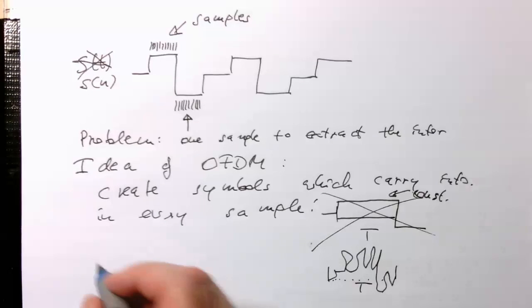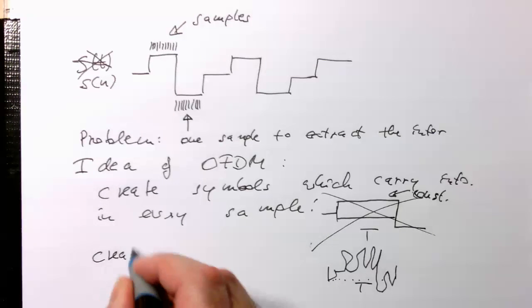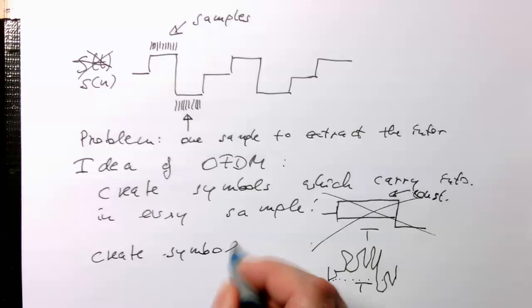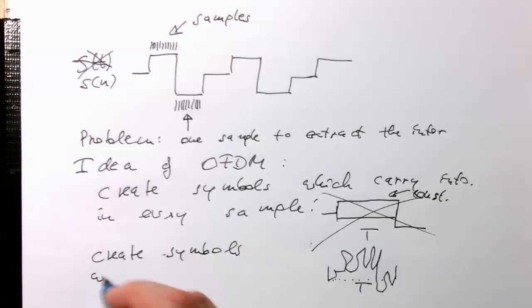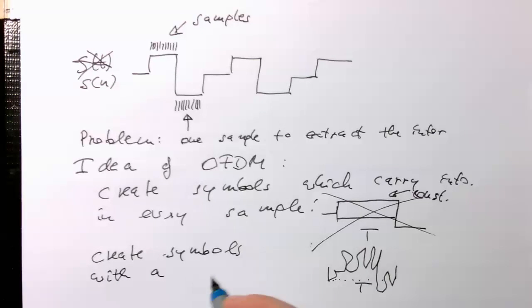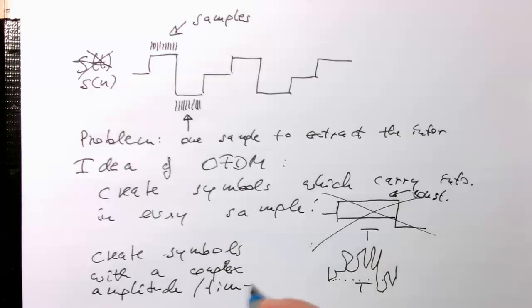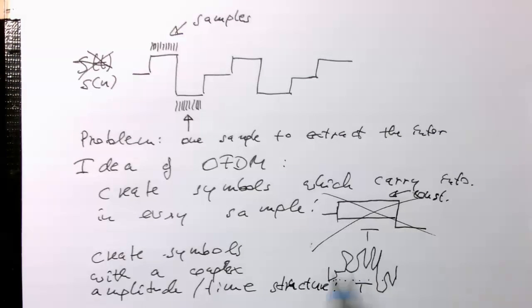So we create symbols with a complex amplitude and time structure. Something like this one here. And so the question is obviously, how do we do that systematically that we are creating these funny shaped symbols here and that they are representing different numbers at the end.